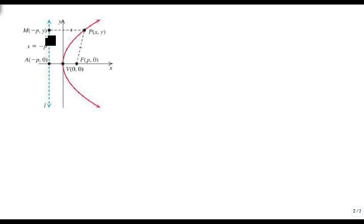You have a point a at minus p, 0, and a point n at minus p, y. And so what we have is that the distance from p to f is the same as the distance from p to m.